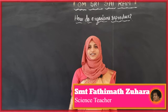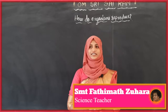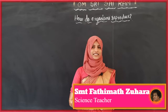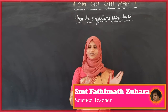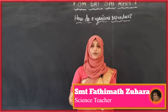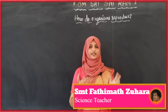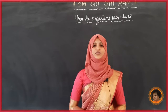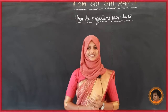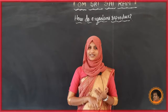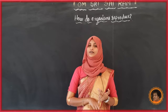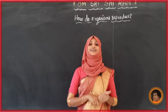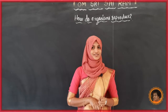Let us start our science class. In the previous class, we discussed the topic 'How do organisms reproduce?' In that, we completed the asexual type of reproduction. Let us recall what we studied. Different methods of asexual reproduction: budding, binary fission, multiple fission, fragmentation, and regeneration.